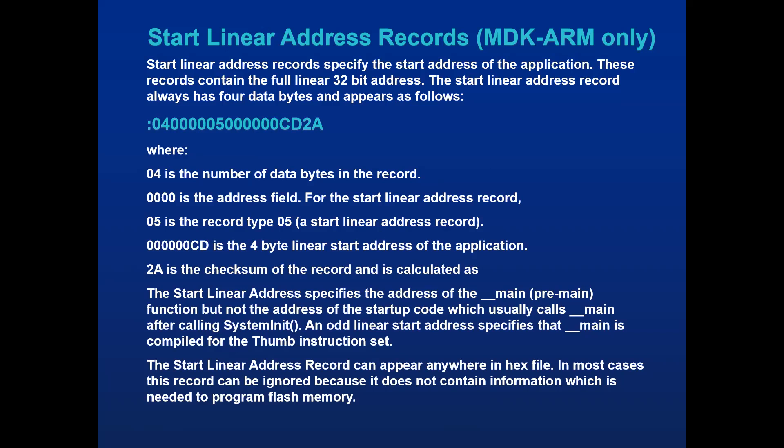The start address only takes effect when the main function is called, not the start of function calling. There are two instruction sets: Thumb instruction set and normal instruction set. For the normal instruction set, the start address is based on an even address. For the Thumb instruction set, it starts with an odd address. The linear address record type 05 can appear anywhere in the code.